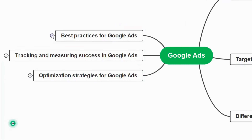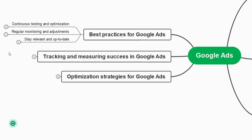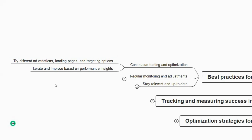Now let us understand best practices for Google Ads. First is continuous testing and optimization — try different ad variations, landing pages, and targeting options. Iterate and improve based on performance insights: if your ad has run for more than a week, you will see insights on how it is performing, and based on those you can update the ad, change locations, demographics, or keywords.